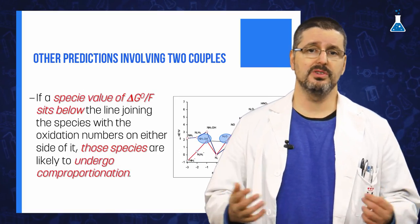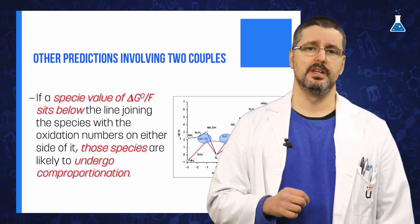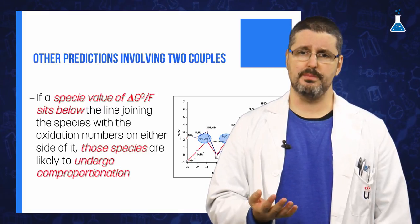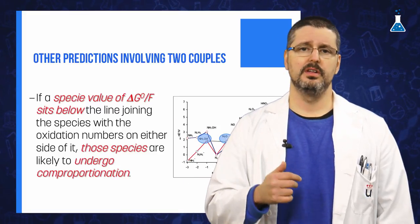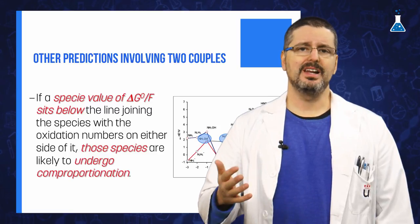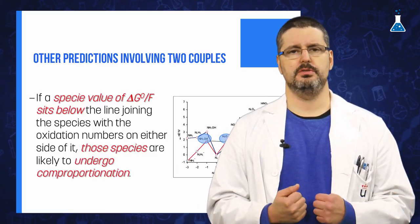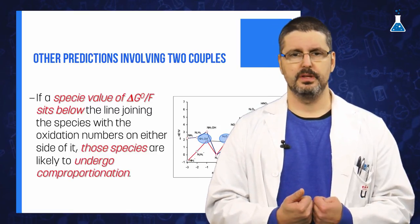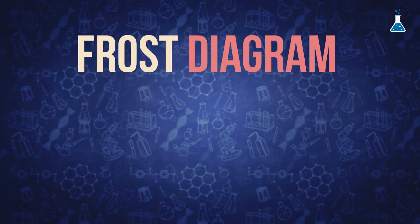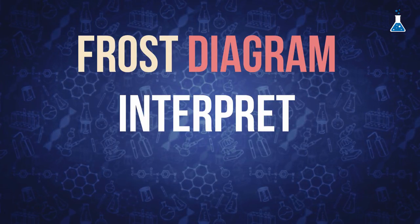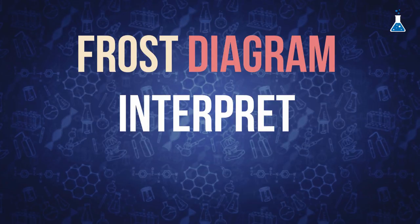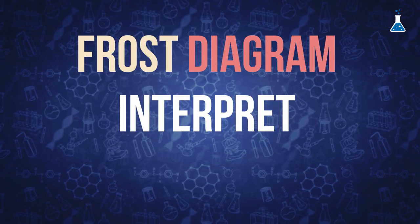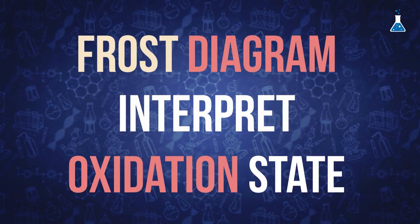Contrarily, if the value sits below the line joining the species with oxidation numbers on either side of it, those species will be likely to undergo comproportionation to this lower value. Therefore, the Frost diagram allows us to interpret qualitatively in a relatively easy way the main features of the different oxidation states of a particular element.